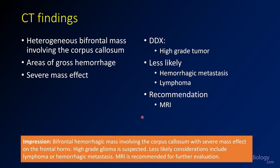When dictating your impression, call this a bifrontal hemorrhagic mass involving the frontal lobes and corpus callosum, with bad mass effect on the frontal horns. Suspect a high-grade glioma; less likely considerations are lymphoma and metastasis. Recommend an MRI. That's really the key information you want to convey on your CT.